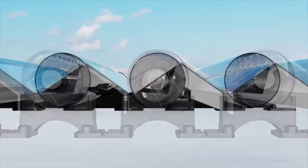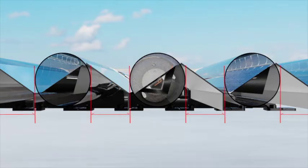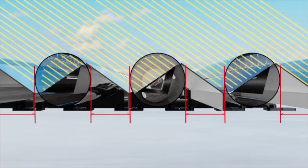To ensure optimal performance at a given latitude, each tube is angled towards the sun and spaced accordingly to avoid self-shading in the winter.